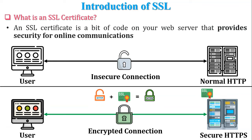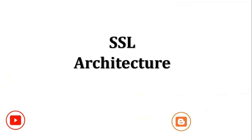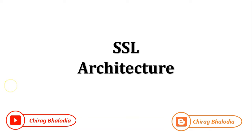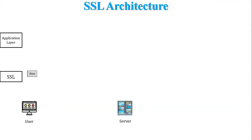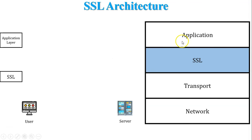Next topic is SSL architecture. SSL encrypts the data received from the application layer of the client machine, then adds an SSL header into the encrypted data, and sends this encrypted data to the server side. SSL works between the application layer and the transport layer, which is why SSL is also called TLS — Transport Layer Security.